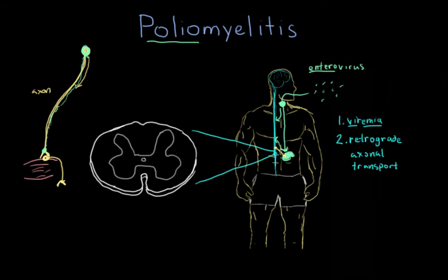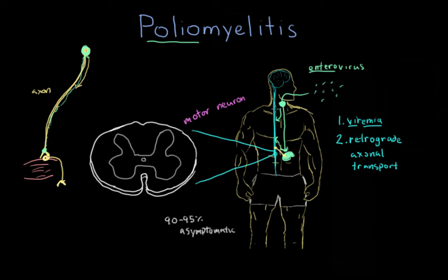Poliomyelitis is a motor neuron disease — motor neurons are the target of the poliovirus. People who are infected don't necessarily show symptoms. In fact, 90 to 95% of people are asymptomatic even after being infected and usually recover. However, even asymptomatic patients can still transmit this virus and shed it through their feces for up to four to six weeks. So the virus spreads and continues through the population.